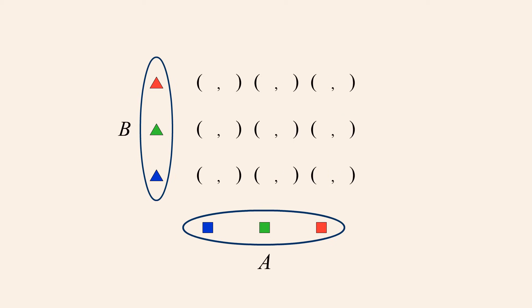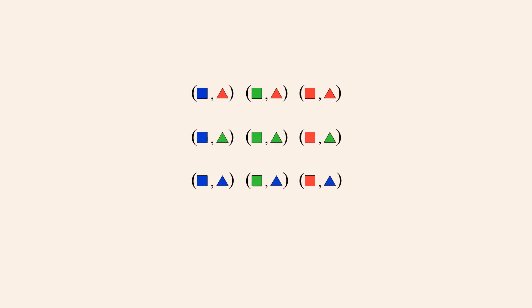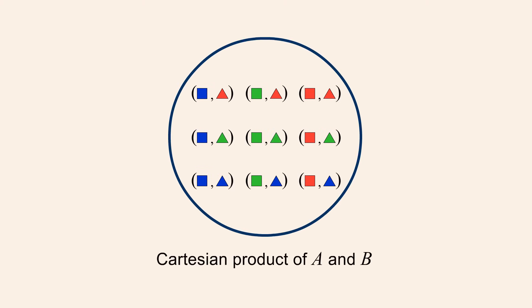Likewise, each element of B is paired with every possible element of A. The blue triangle from B forms ordered pairs with each of the squares from A. The same is true for the green triangle and red triangle. These nine ordered pairs form a new set — the Cartesian product of A and B. This set contains every possible ordered pair whose first element is from set A and second element from set B.